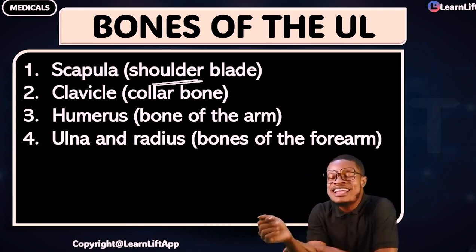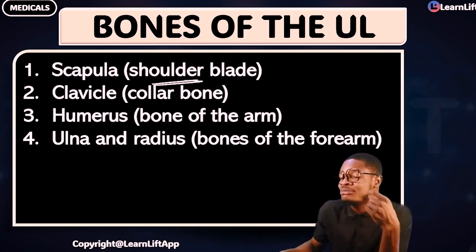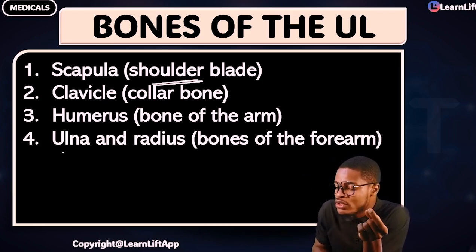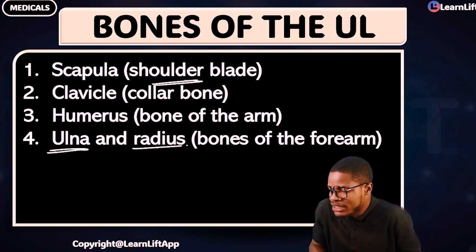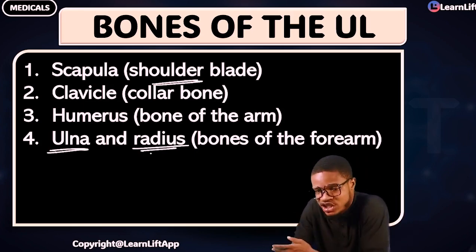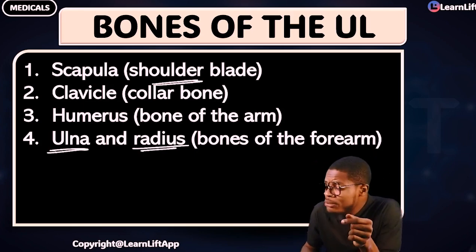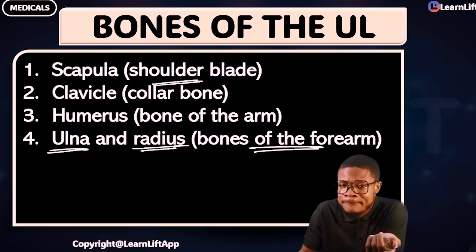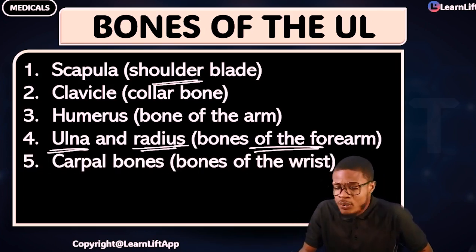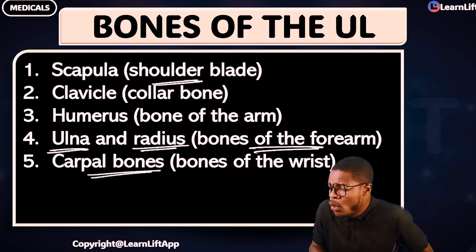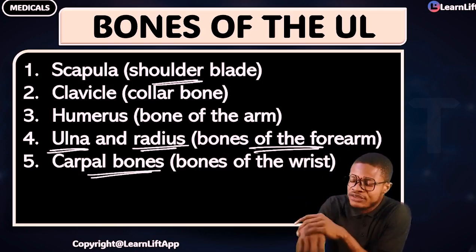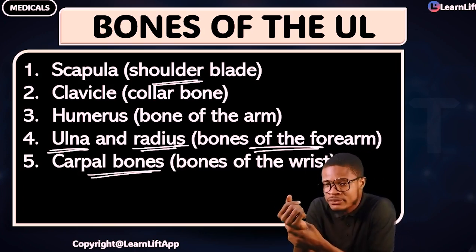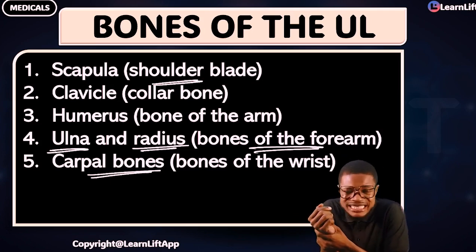Number four is called the ulna and the radius. One is medial, one is lateral. Which one is medial? The ulna is medial — close to the midline. Away from the midline is the radius — that one is lateral. The two of them form the bones of the forearm. Number five we have what is called the carpal bones — the bones of the wrist.